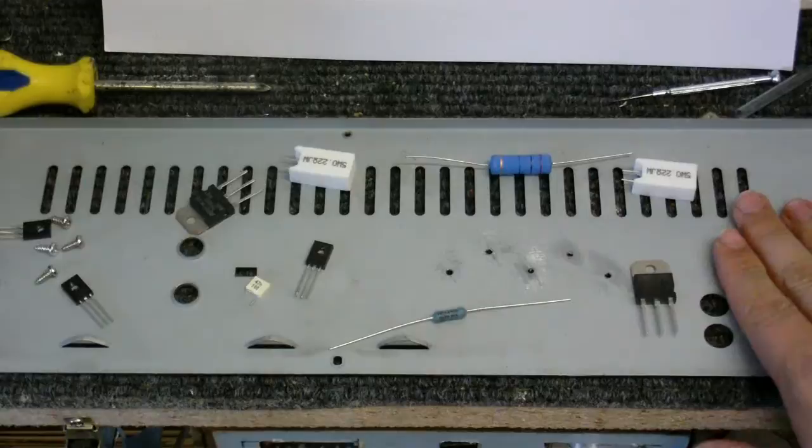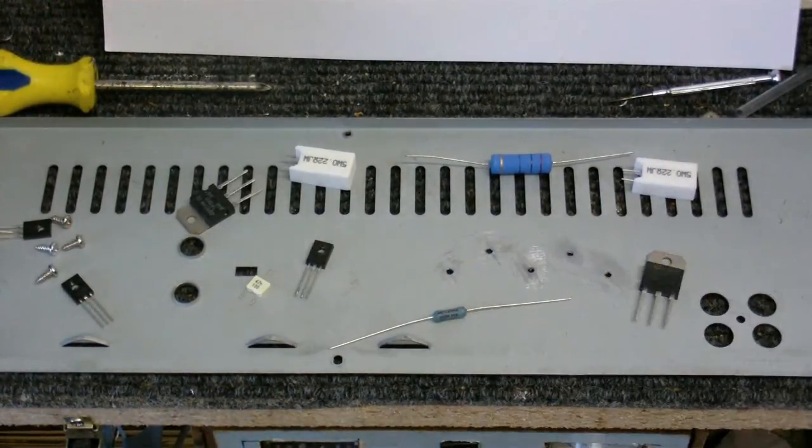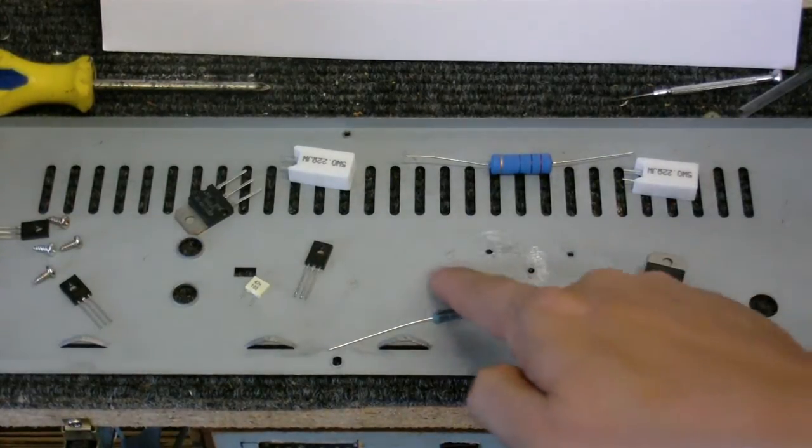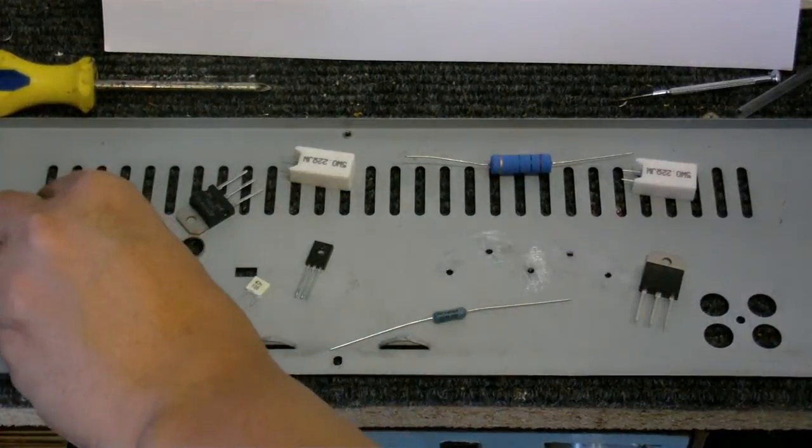This piece of metal here is going to be the heat sink, and I've got all the transistors ready and prepared this for putting the transistors on. As you can see, I've drilled some holes here and filed it down so it's nice and smooth, because we don't want any sticky-outy bits.